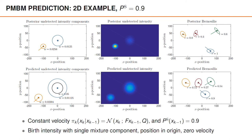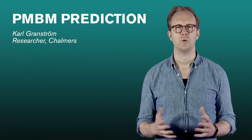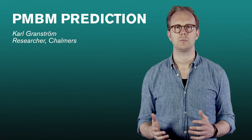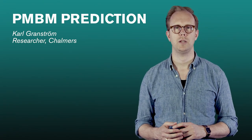For the predicted Bernoullis, their motion follows the constant velocity motion model and the probabilities of existence decrease by a factor equal to the probability of survival. Note that if we had an MBM with more than one multi-Bernoulli, which is the typical case in MOT applications, each multi-Bernoulli would be treated just like the one illustrated here. That was how we predict the PMBM density. Next, we're going to look at the Bayes update of the PMBM density.